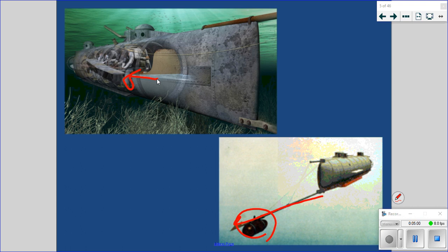All these advances in battlefield technology were not followed by advances in how wars were fought. There's an old adage that generals are always fighting the last war. At the beginning of the Civil War, generals used tactics from the Napoleonic era, sending troops across open fields against modern rifles and artillery. It was a bloodbath — 620,000 deaths, the most destructive war in our nation's history.